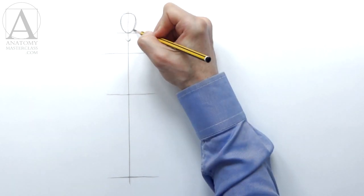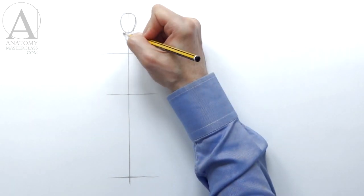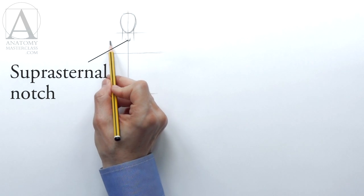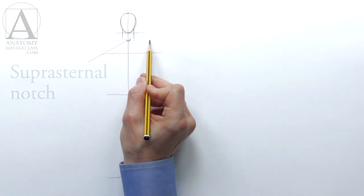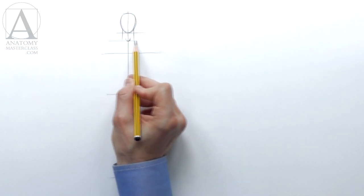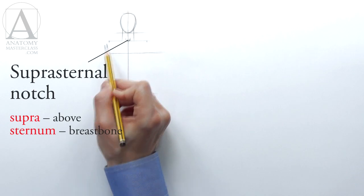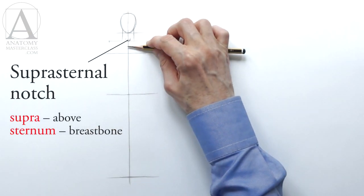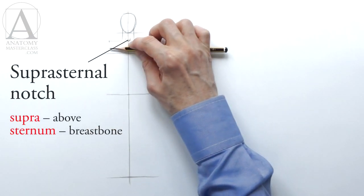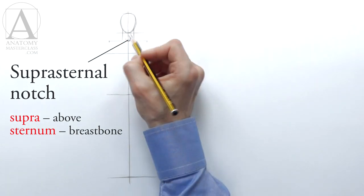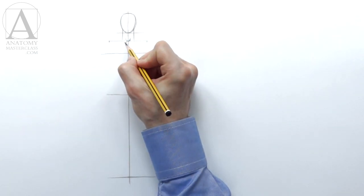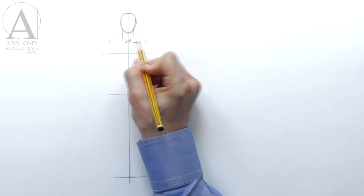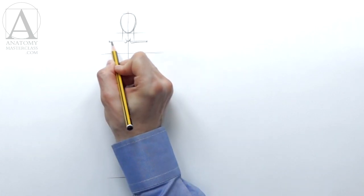At the base of the neck there is a notch called the suprasternal notch. It is located just above the breastbone. The Latin name, suprasternal, comes from two words: supra, meaning above, and sternum, meaning breastbone. This notch is a good indicator of where the line of the collarbone should lie.